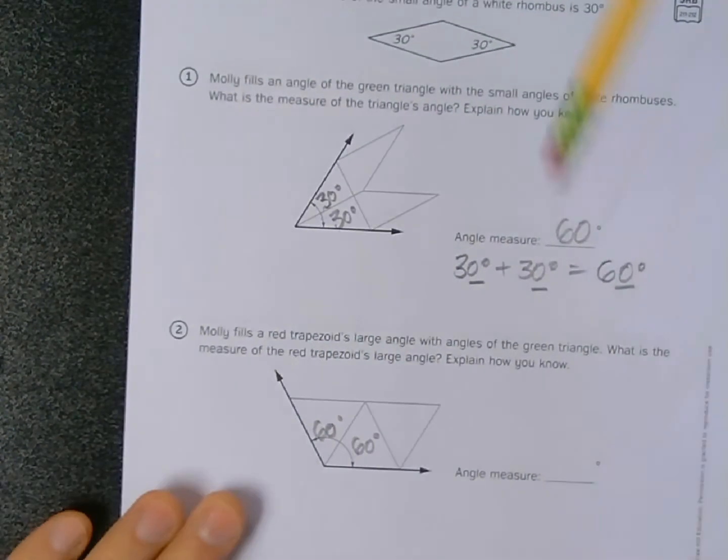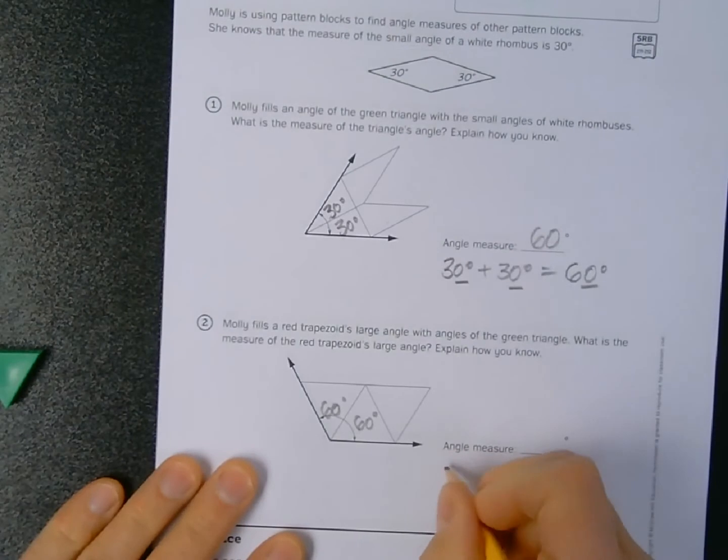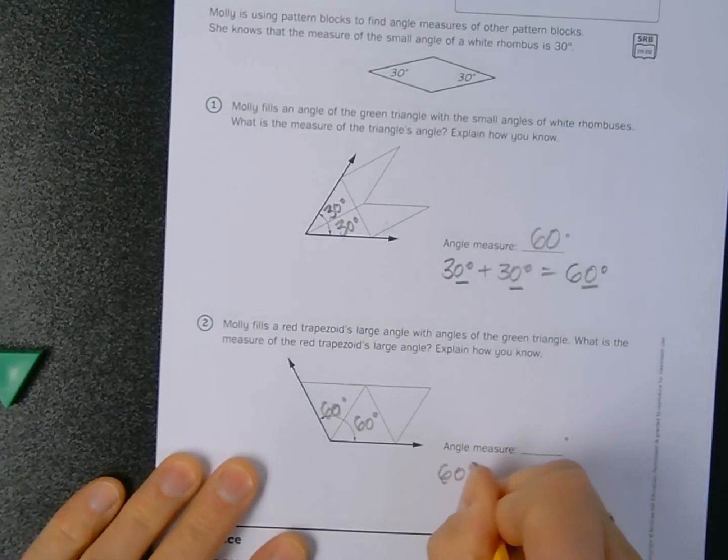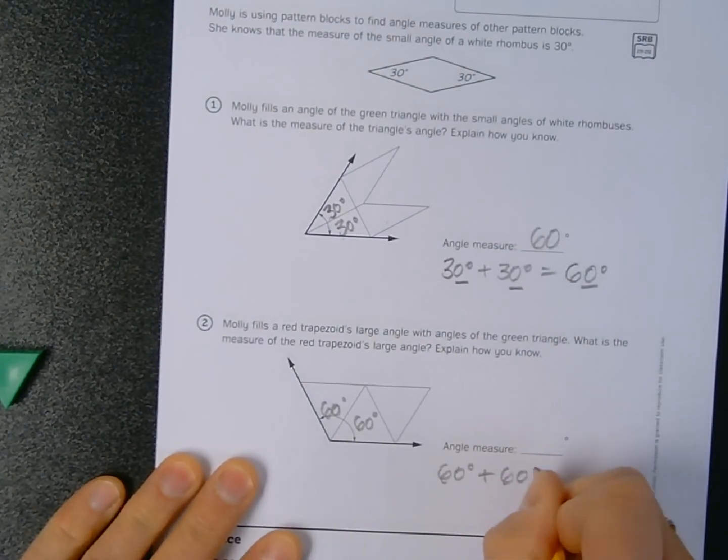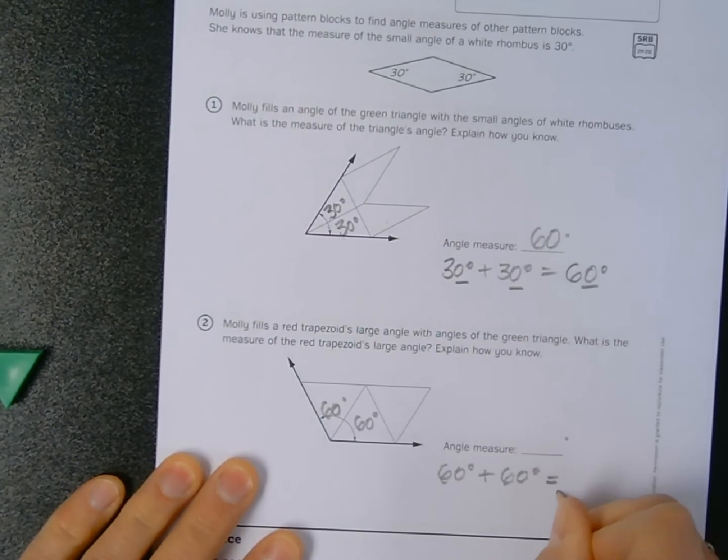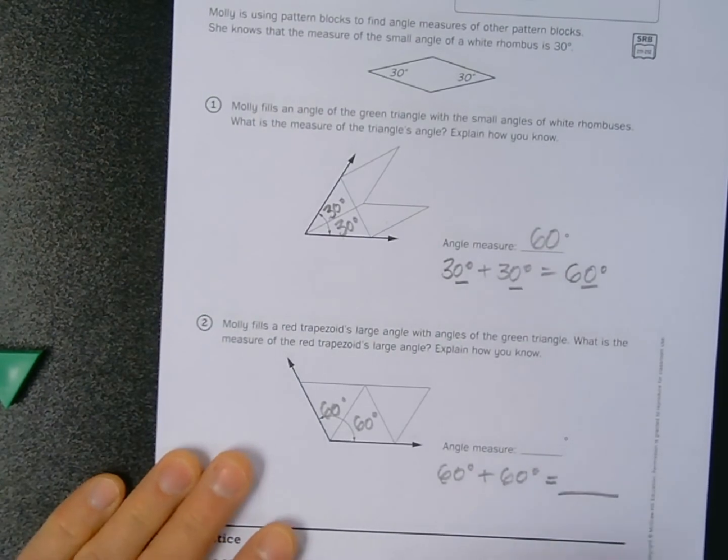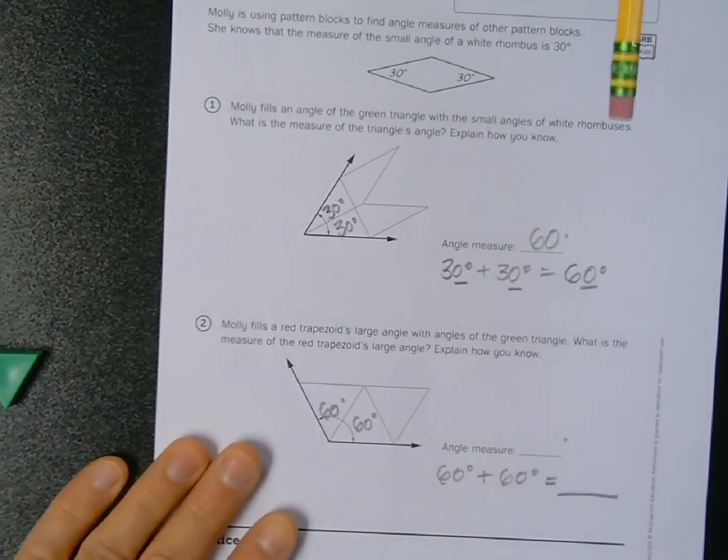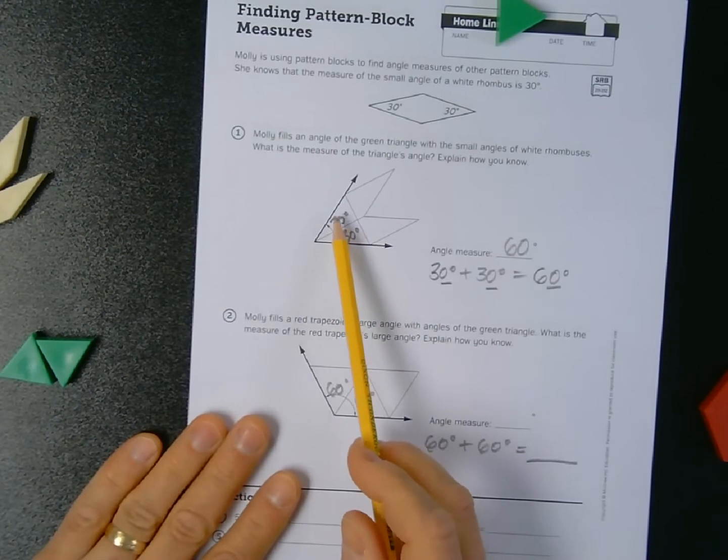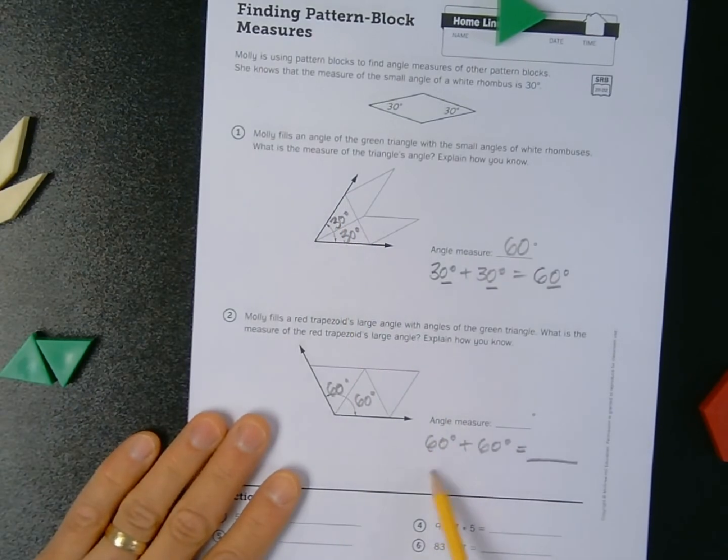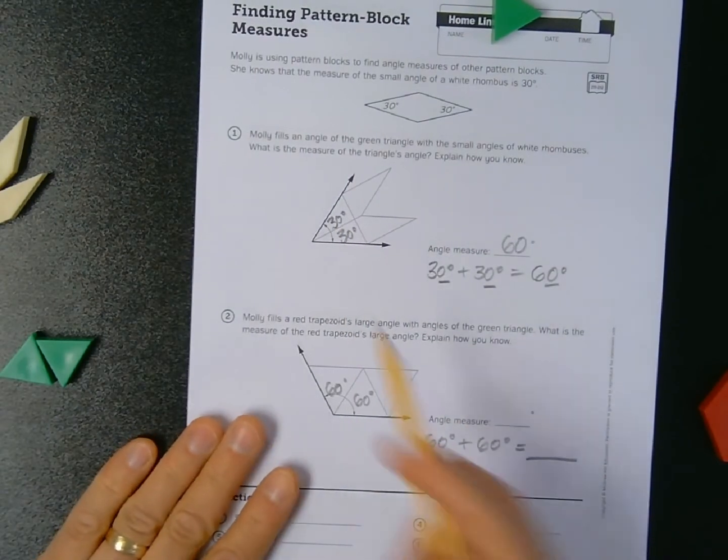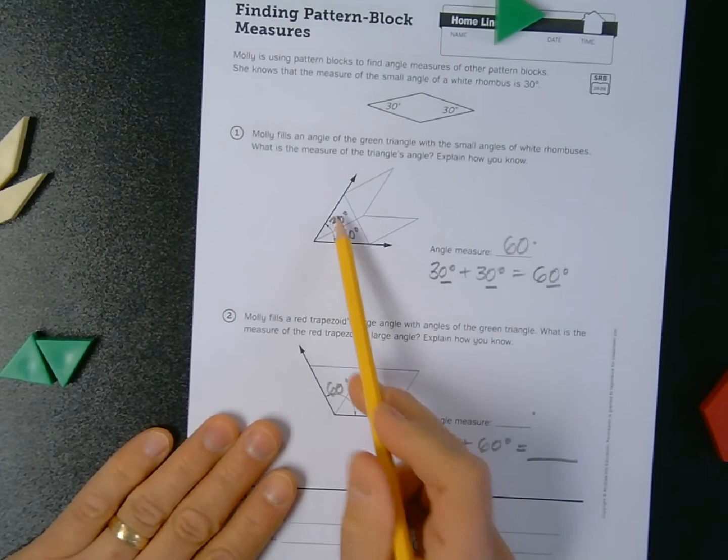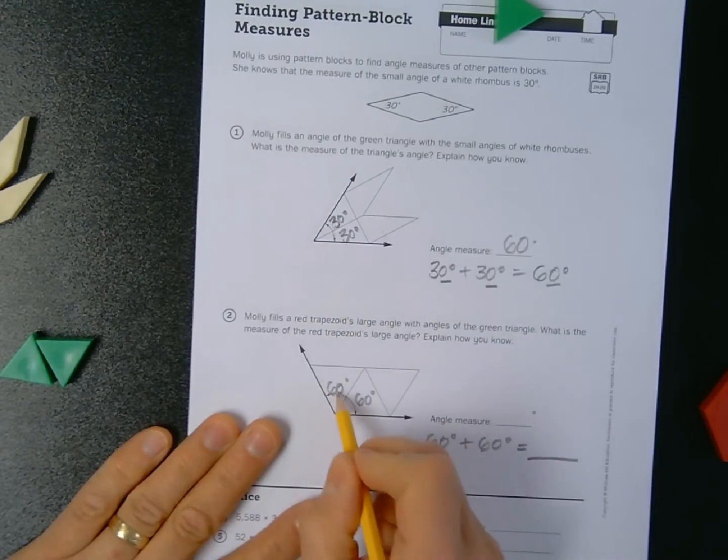So the angle measurement here for number two is the combination of 60 degrees plus 60 degrees. I'll let you do some of the heavy lifting there. In reality, what I've measured up here can also be inferred for this angle measurement.